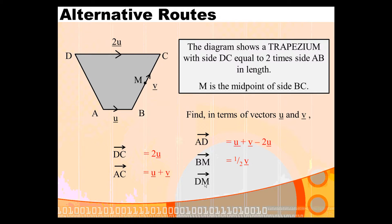To go from D to M, you're going from D along to C and then down. So it's 2U. And then to describe this journey down, because we're going in the opposite direction to vector V, it's going to be negative a half of V. So we say it's 2U minus a half of V.